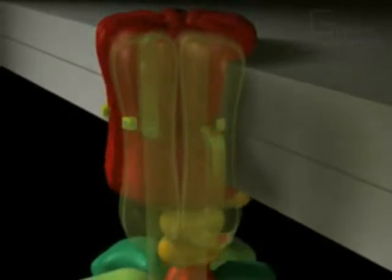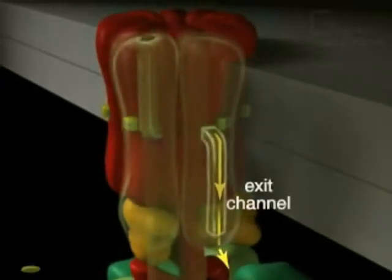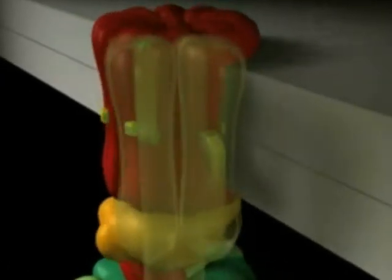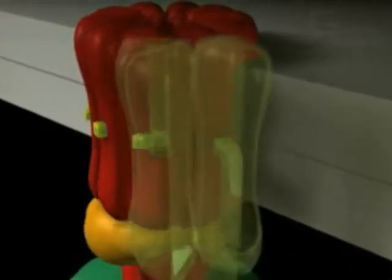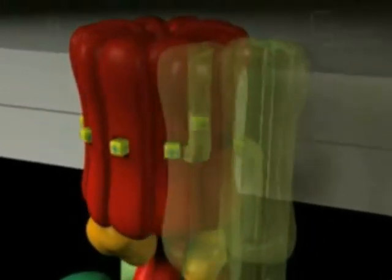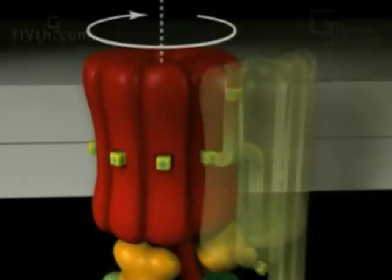Once the protonated subunits have completed an almost full circle and have returned to the static subunits, an exit channel allows them to leave to the other side of the membrane. In this way, the energy stored in the proton gradient is converted into mechanical, rotational energy.